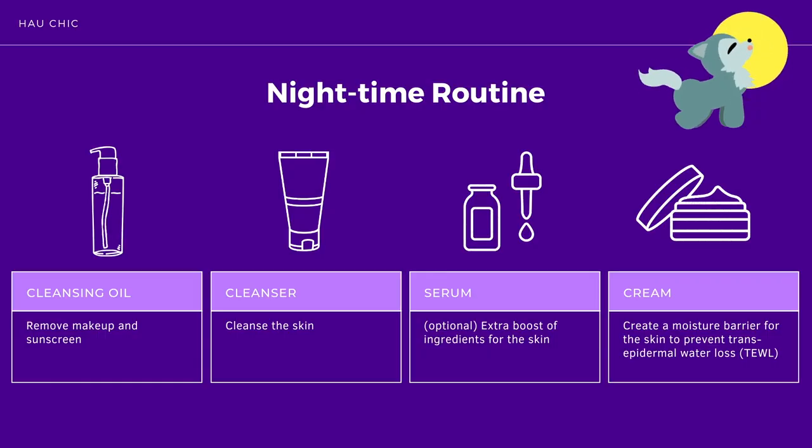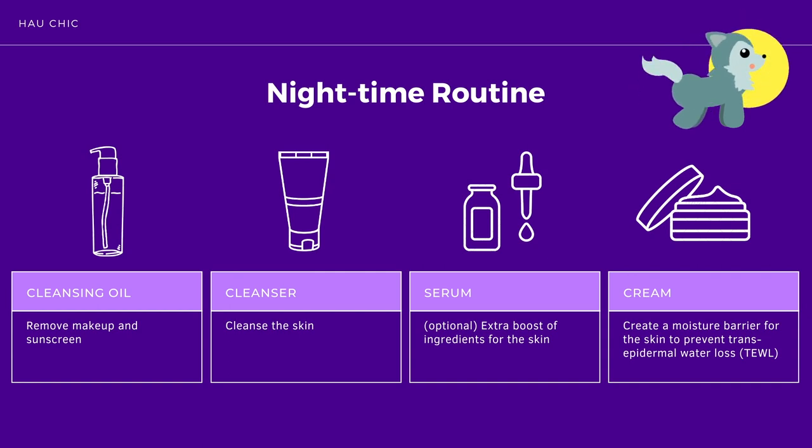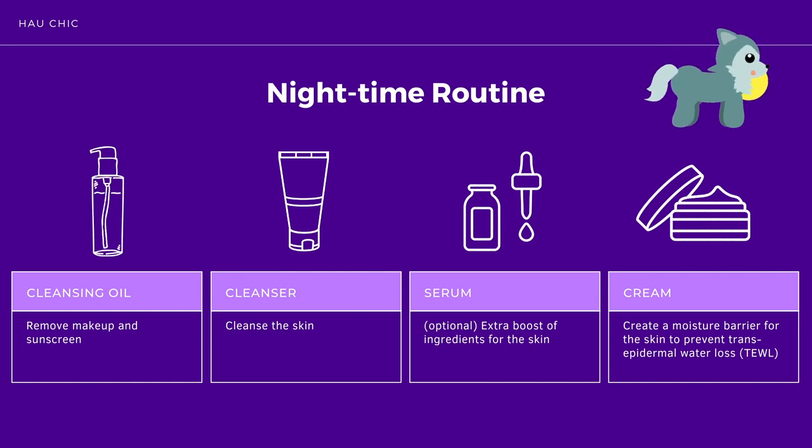When it comes to nighttime, you want something slightly different but not too different. The key difference is you want to add an extra cleanse step — a double cleanse. You want to have a cleansing oil or balm to remove excess makeup and sunscreen from your face, and then go in with a cleanser to clean your skin. Serum is optional but it's the fun and exciting part of skincare, and then you finish off with the cream.